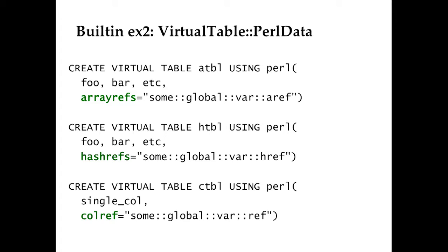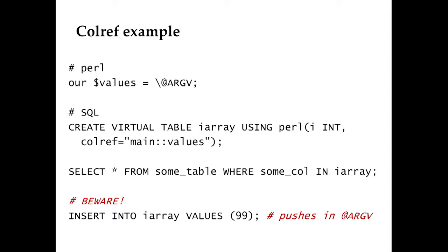The other virtual table is called perl_data. The idea is you have a virtual table from SQL which is bound to some Perl global variable, and that global variable is either a list of hash refs, a list of array refs, or a single array — what I called a colref. This is useful because you can communicate very easily between the SQL world and the Perl world.